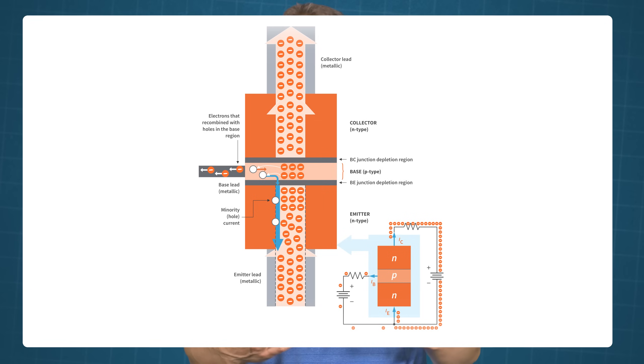The operation inside a PNP transistor is very similar to the NPN type, but the roles of the electrons and holes are swapped. The external bias voltages and the current directions are also reversed.